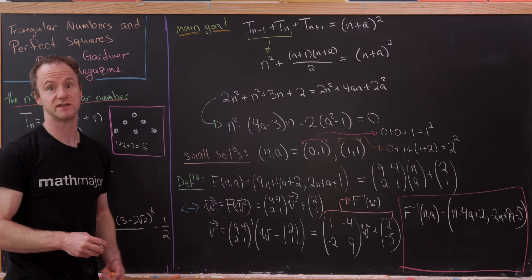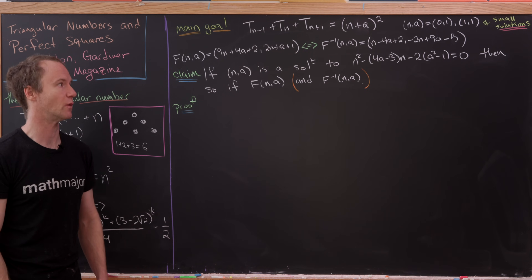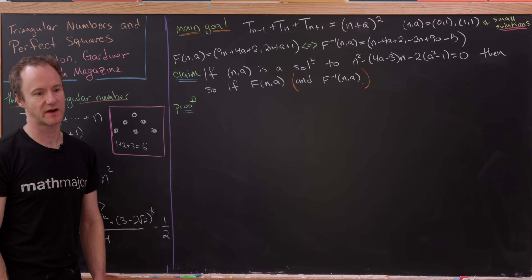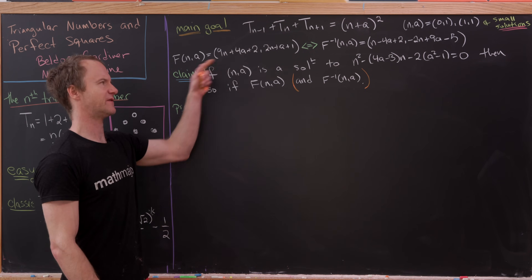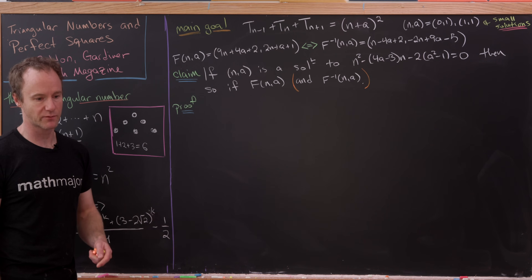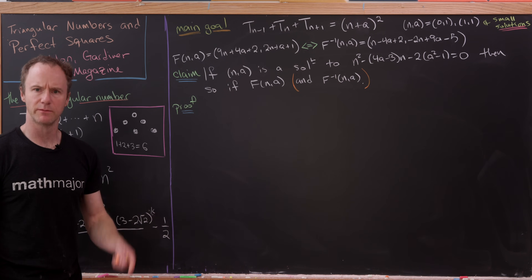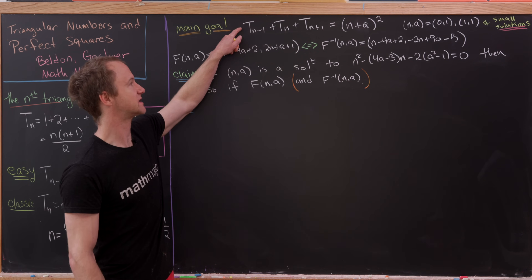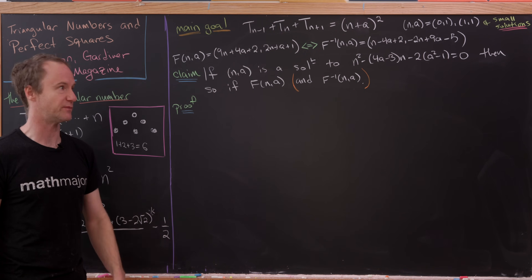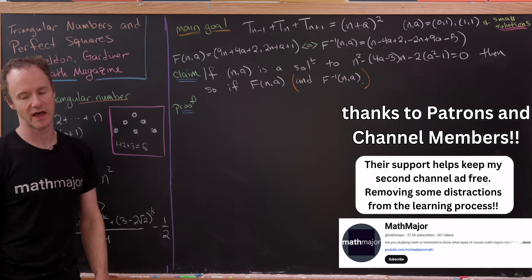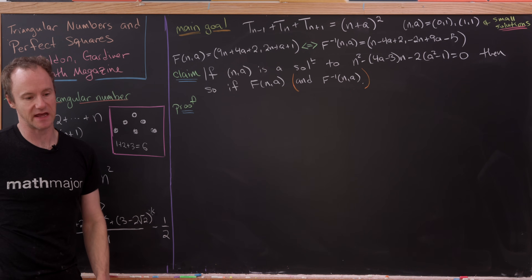On the last board we talked about two small seed solutions: (0, 1) and (1, 1). Then we introduced two affine transformations, f and f inverse. Here's a really important claim: if n comma a is a solution to that quadratic equation — which means it solves the three-triangular-numbers-equal-one-square problem — then so is f evaluated at (n, a). And, in parallel, so is f inverse applied to (n, a).